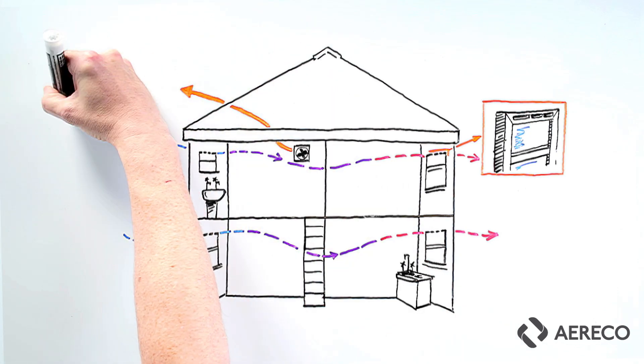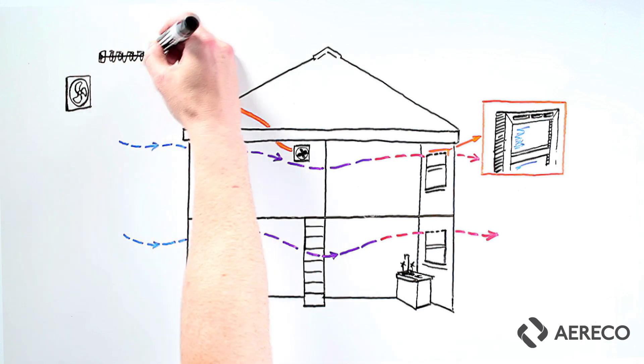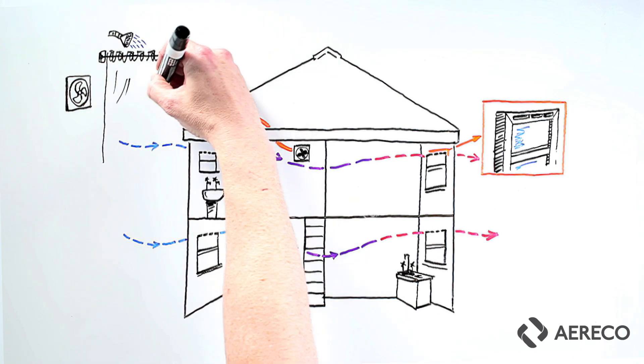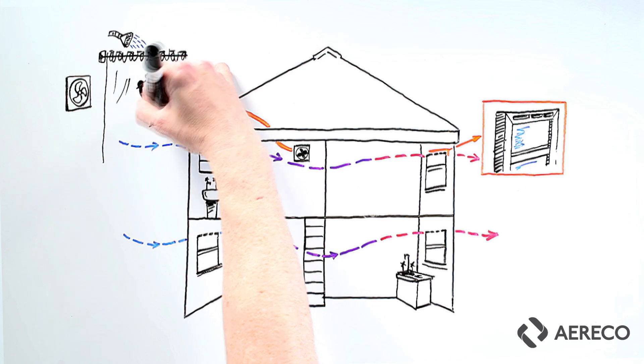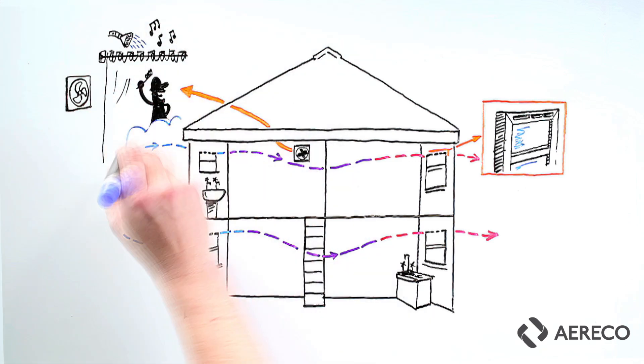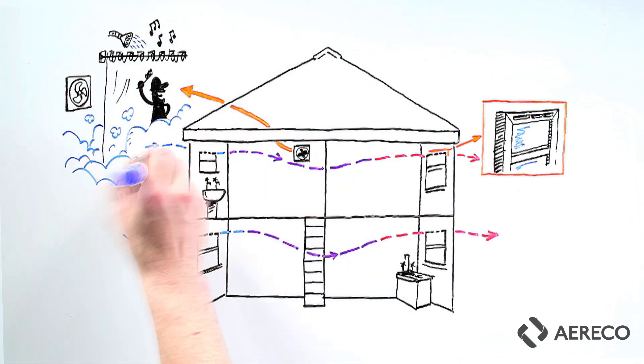In addition, fans in wet rooms like bathrooms and kitchens remove moisture at source. They're called intermittent fans because they're only on for a short period of time when there's activity in those rooms, usually triggered by a light switch or something else. Once they stop, we rely on the cross ventilation to manage the rest.